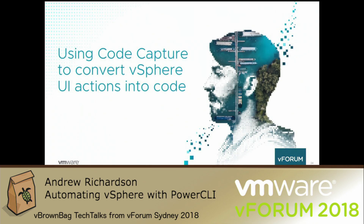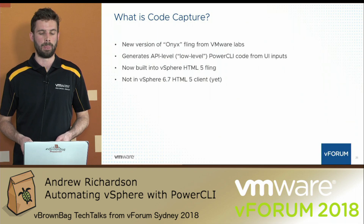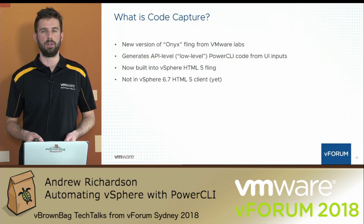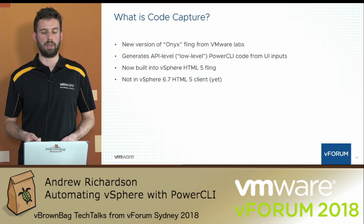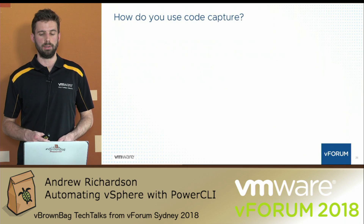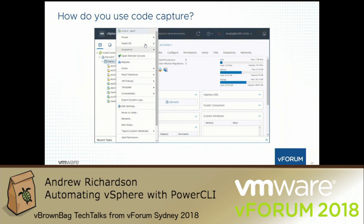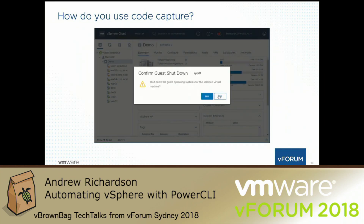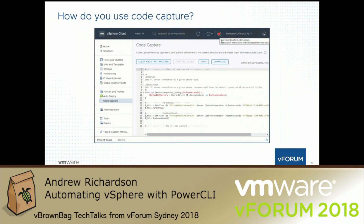Lastly, let's look at using Code Capture to convert vSphere UI actions into code. For those who haven't heard of it — Code Capture is the new version of the Onyx Fling from VMware Labs. It generates API-level or low-level PowerCLI code from UI inputs, and it's now built into the vSphere HTML5 Fling. In the animation shown, we click a record button in the vSphere UI and perform an action on a virtual machine — in this case shutting down the guest OS. Once we confirm and stop the recording, we're taken to the Code Capture section of the UI where we see the output PowerCLI code for shutting down the guest OS.